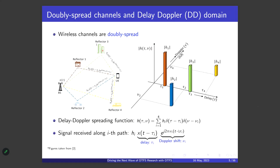A doubly spread channel is where each channel path induces both delay and Doppler shift. We represent these channels by their spreading function h(τ, ν). In this example we have four paths. The signal x(t) is transmitted from the base station and gets reflected from reflector one — a stationary house — and received at the user equipment.